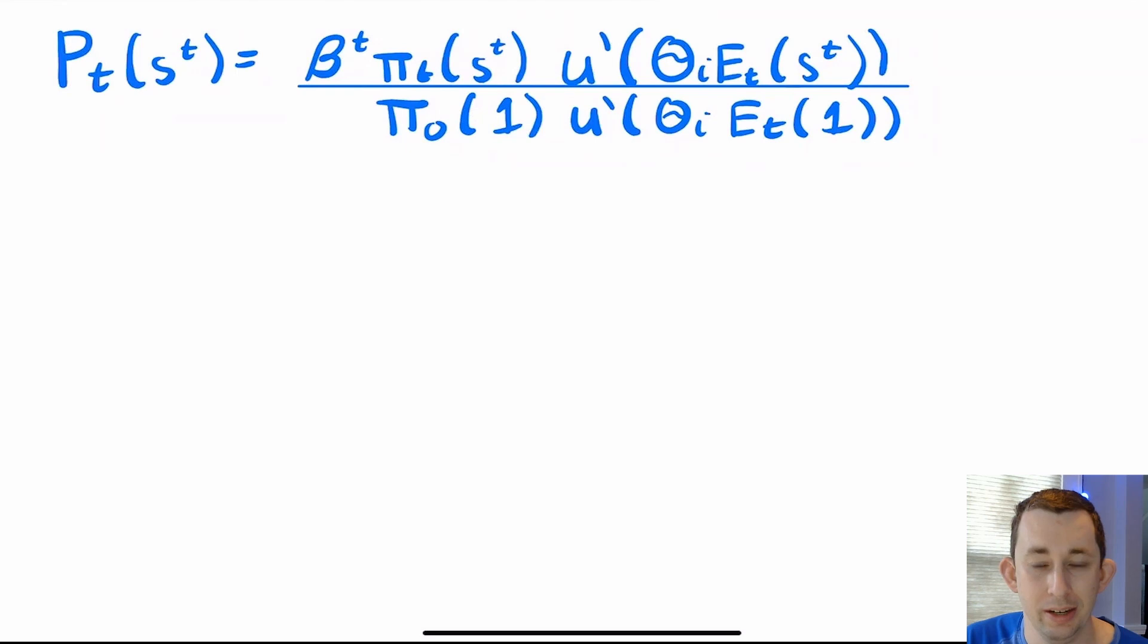I want to talk about the key takeaways in terms of price. We know from the result above that we're going to have perfect consumption smoothing across state and time. You can also see that because again, we're consuming a fixed proportion of the aggregate endowment in any given period, in any given event history. But let's talk about the prices.